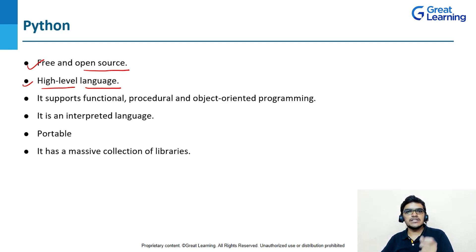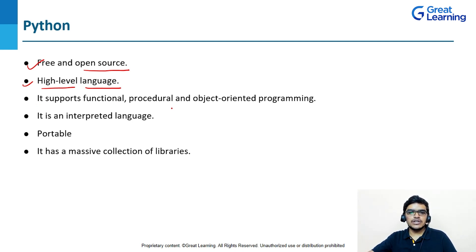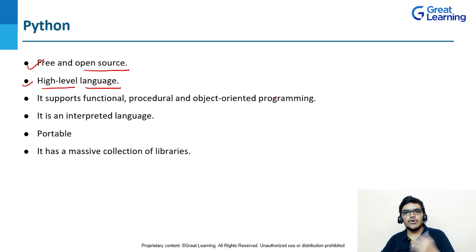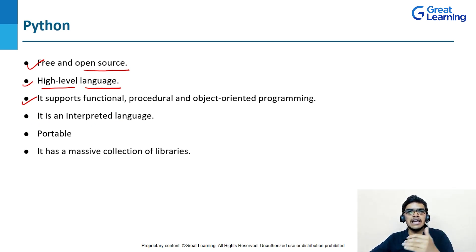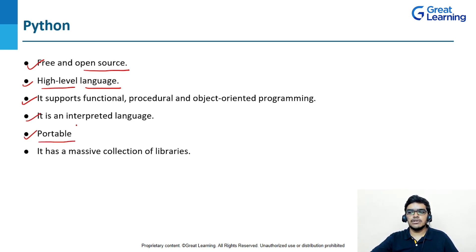Python is a high-level language because you don't need to manage the memory, and you don't have to remember the system architecture. It also supports functional, procedural, as well as object-oriented programming. So Python supports classes, polymorphism, encapsulation, etc. in OOP. The next point is that it is an interpreted language, meaning Python code is executed line by line. Now, Python is also portable.